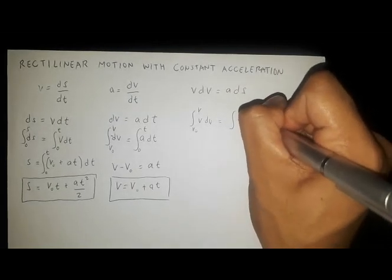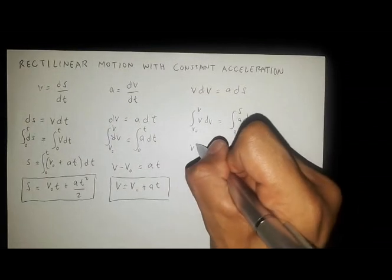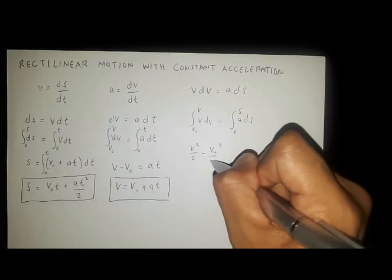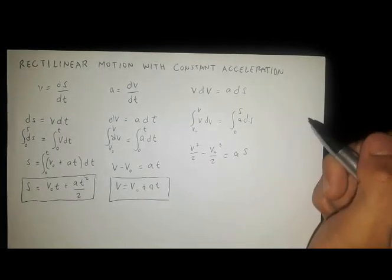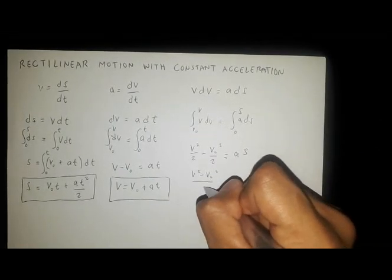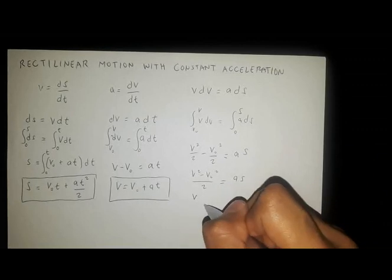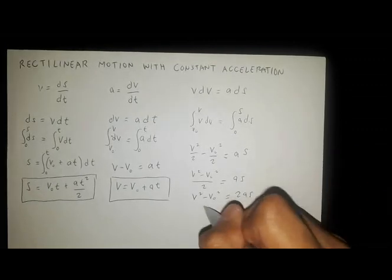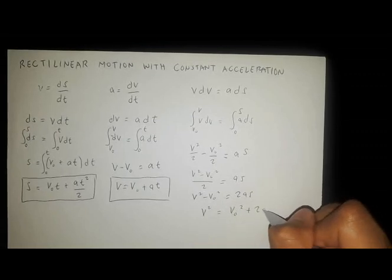So we have v² over 2 minus v₀² over 2 equals as. This can be written as v² minus v₀² over 2 equals as, then multiplying through: v² minus v₀² equals 2as, which gives us v² equals v₀² plus 2as.